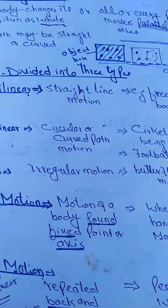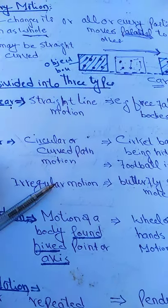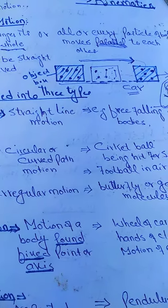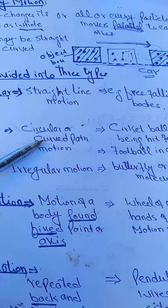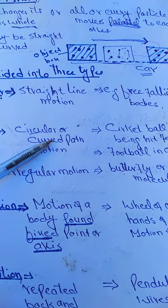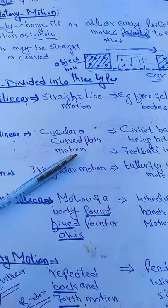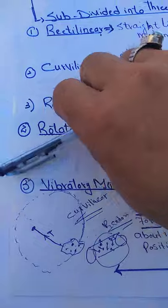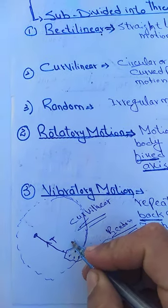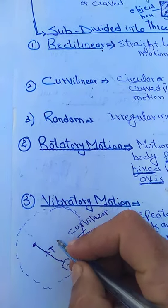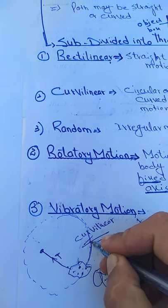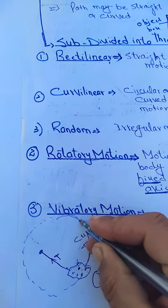The second type is curvilinear motion. Curvilinear motion is that type of translatory motion in which an object moves in a curved path or circular path. We call it curvilinear motion. For example, if we take a stone and tie it with a string, and apply force on this string, then the stone starts motion in a circular path.